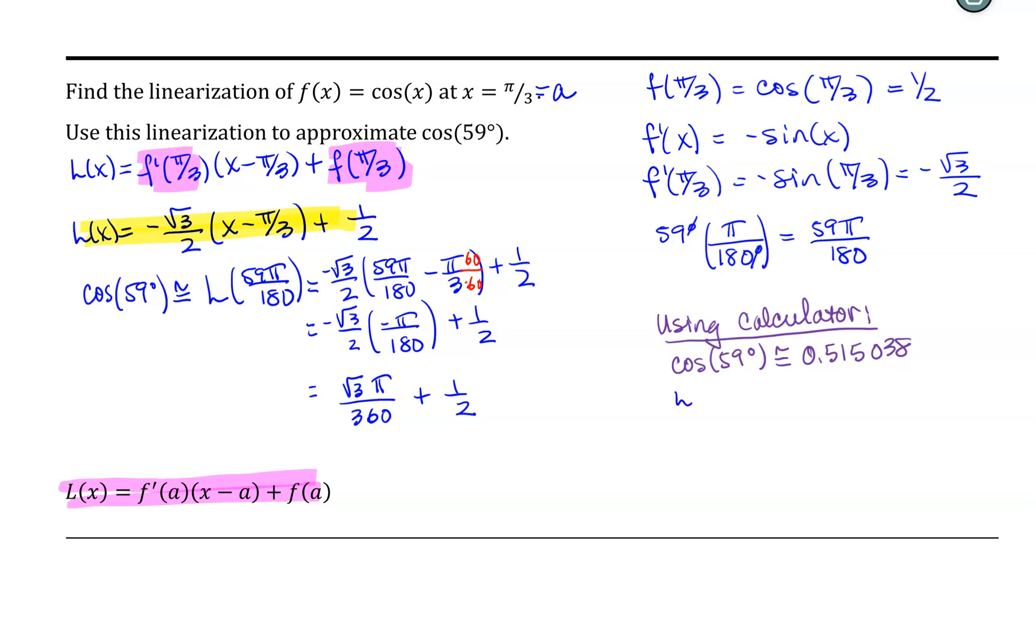With my linear approximation, L(59π/180), which is equivalent to 59 degrees, is equal to √3π/360 + 1/2, and that is equal to approximately 0.515115.